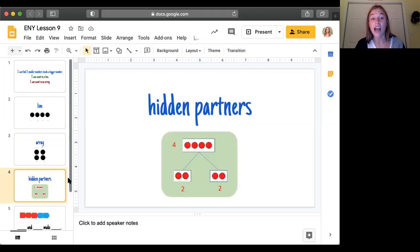And now we are going to talk about hidden partners. Hidden partners are two smaller numbers that are inside a bigger number. So here we see that two and two are hiding inside the four. So all together we have one, two, three, four, but then you can break it apart and you have two and two.